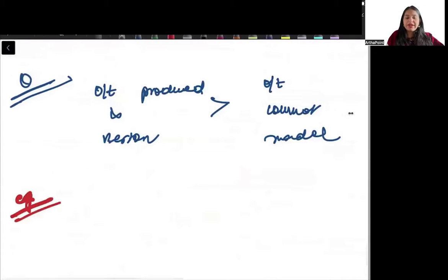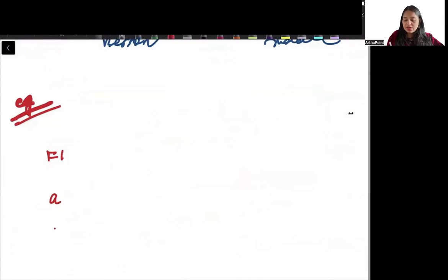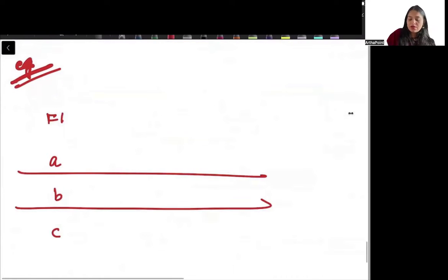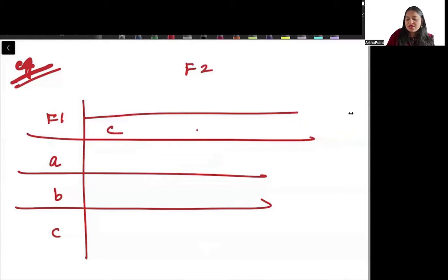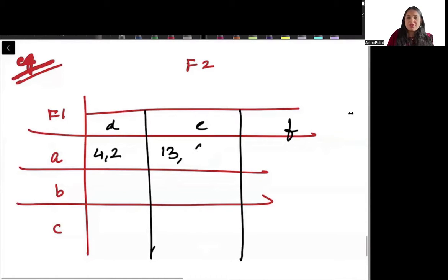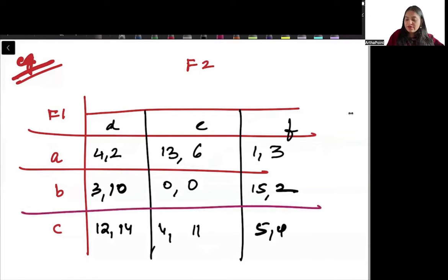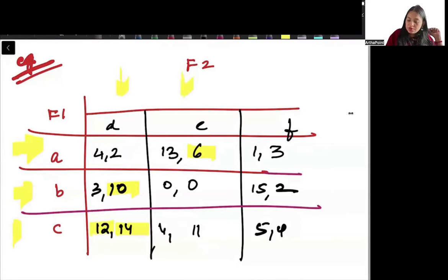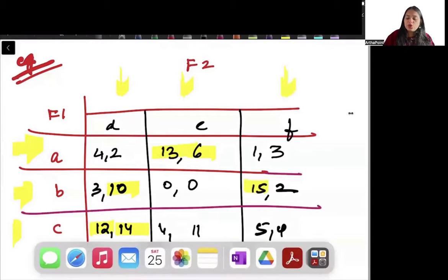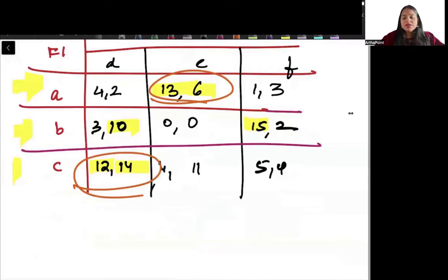For example, if firm 1's actions are A, B, C and firm 2's actions are D, E, F, with payoffs given as: (4,2), (13,6), (1,3), (3,3), (10,0), (0,15), (2,12), (14,4), (11,5), (4) — you should know how to find the Nash equilibrium in such models. We see there will be two Nash equilibria: (A, E) and (C, D).